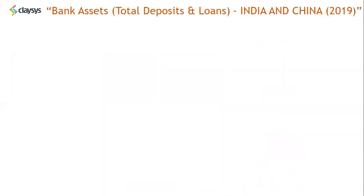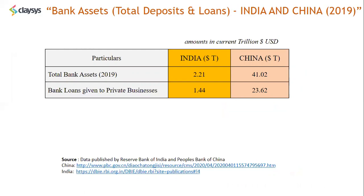Let's look at another data point — bank assets, which are the total deposits and loans with banks in both India and China. The total bank assets in India are 2.2 trillion dollars. In China, the total bank assets are 41 trillion dollars. In India, the total loans given to private businesses is 1.4 trillion dollars out of the 2.2 trillion in total bank assets. In China, the loans given to private businesses is 23 trillion dollars.